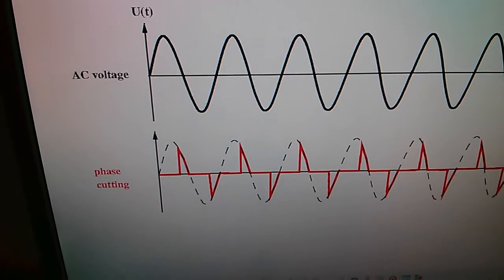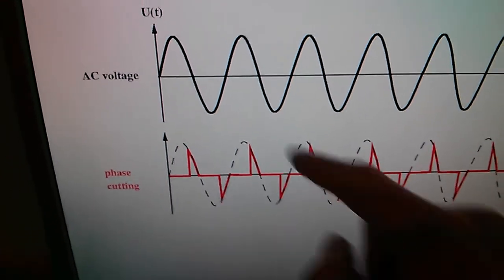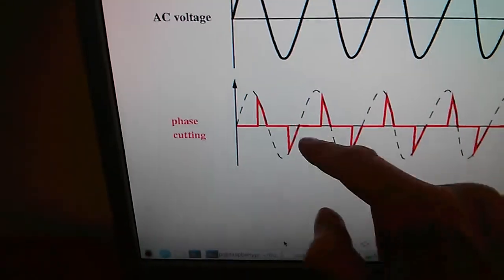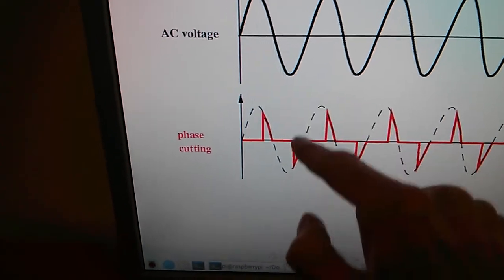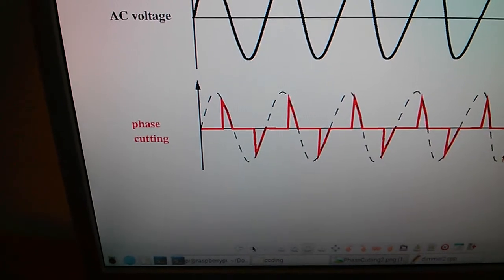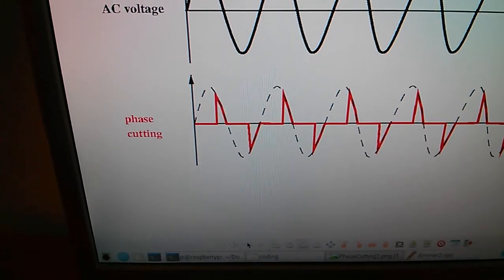And looking at the diagram again, so if the grid frequency is 50 hertz, then one full period lasts 20 milliseconds. And each half period, each half wave lasts 10 milliseconds. That's why it's reasonable to have a delay of 0 to 10 milliseconds.